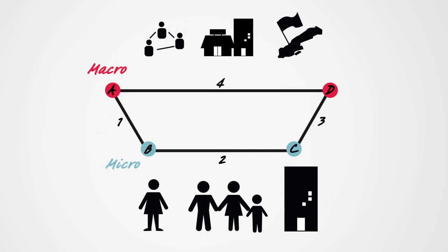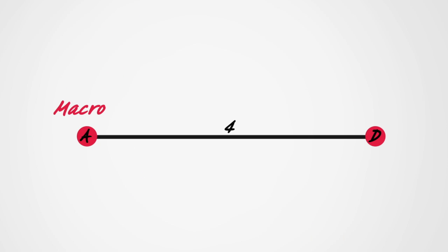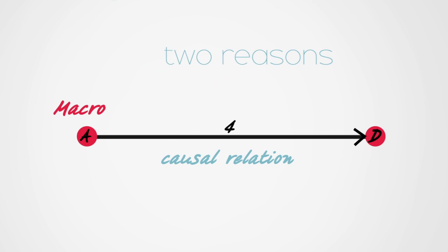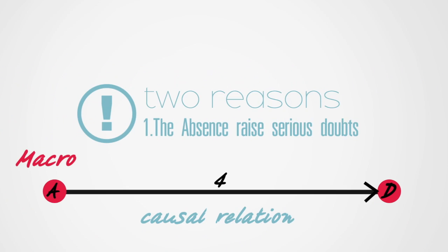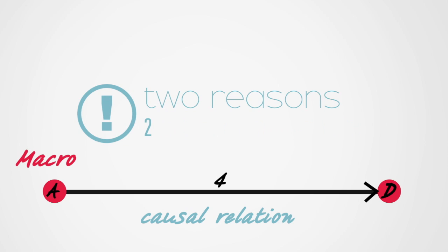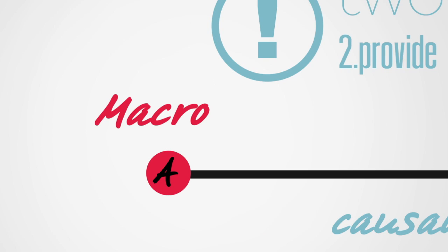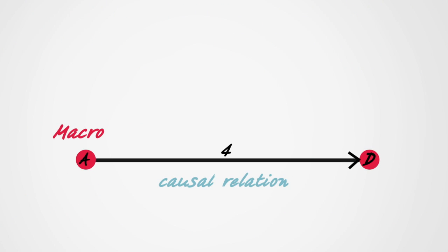When using the diagram, the starting point is a relation between macronodes A and D. Arrow 4 refers to a hypothetical causal relation between them. With the help of the diagram, we can study whether such a causal relation makes sense. This is done by reconstructing the underlying causal mechanism. Understanding the mechanism is important for two reasons. First, the absence of a sensible and empirically supported mechanism raises serious doubt about the causal relation. Second, the mechanism provides explanatory understanding. Understanding how the cause produces the effect is the key for scientific explanation.